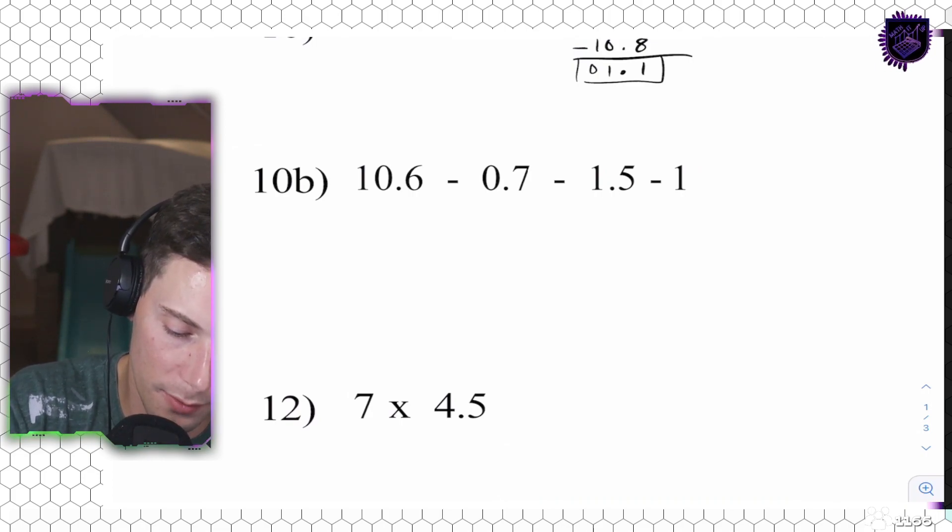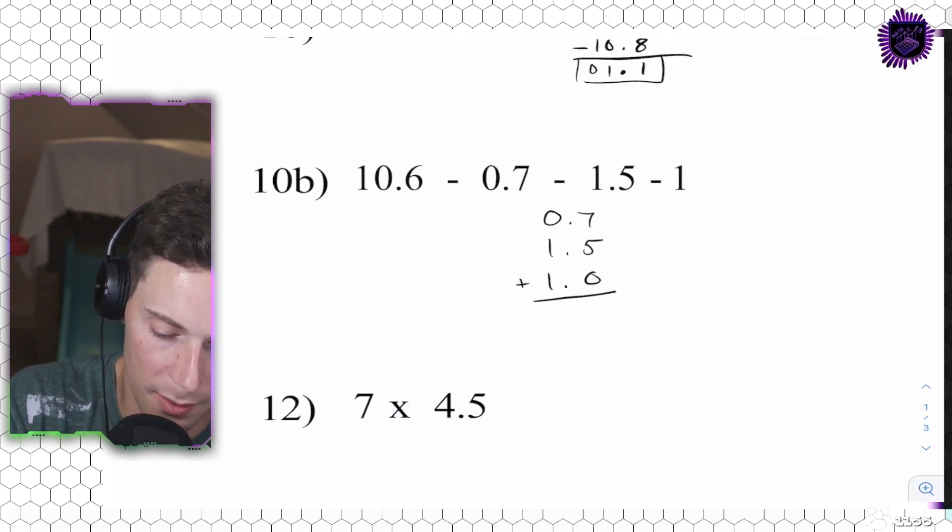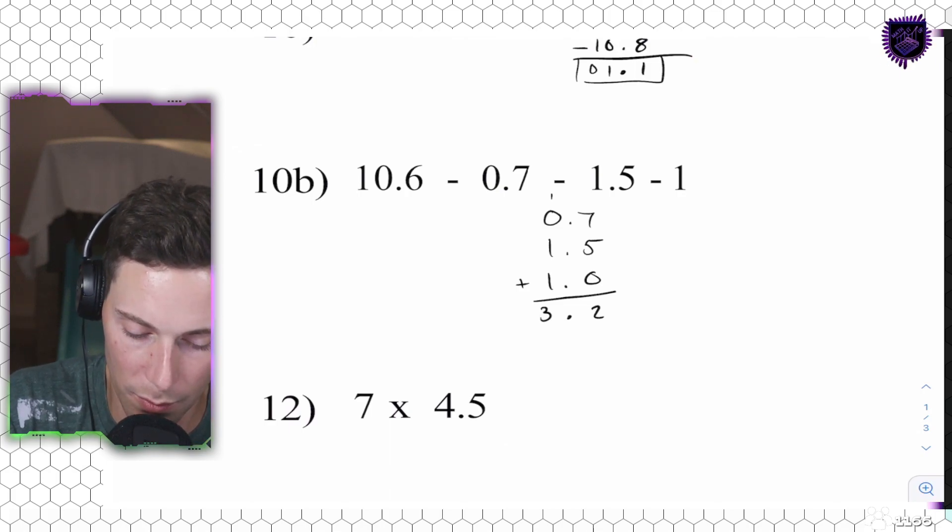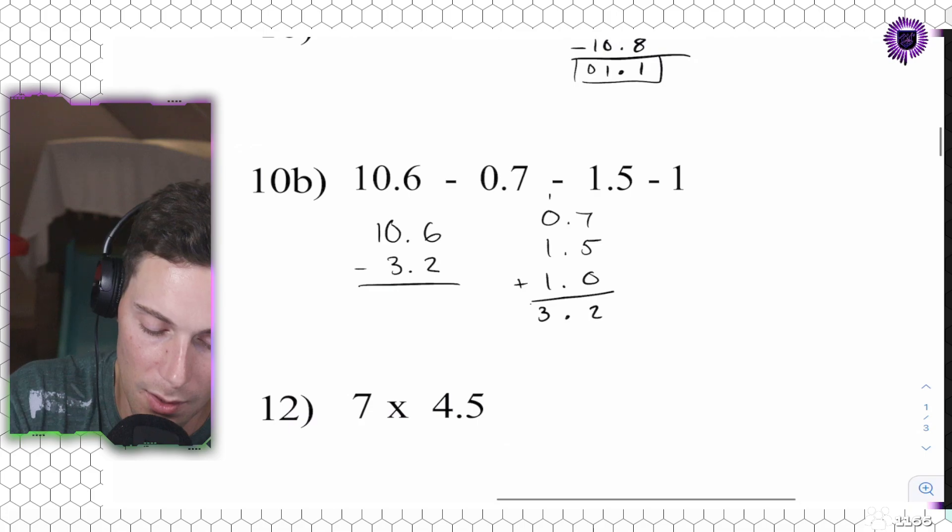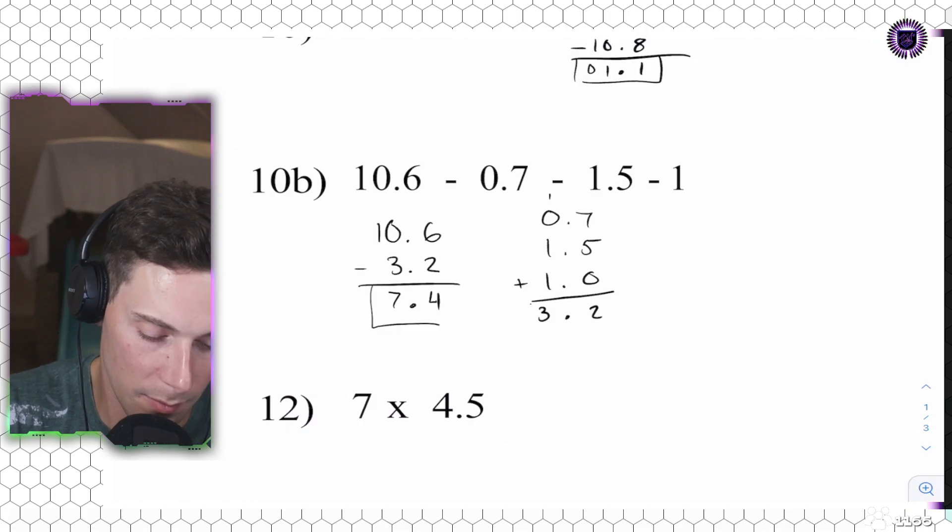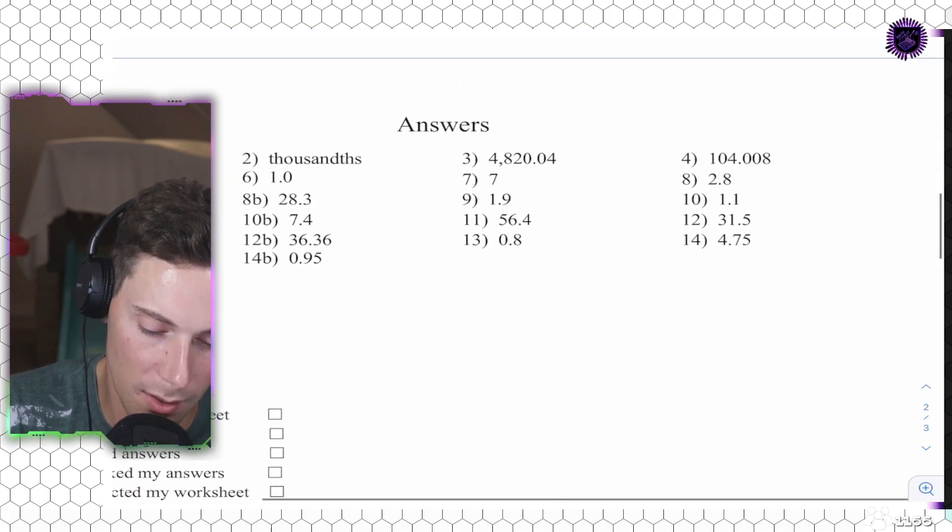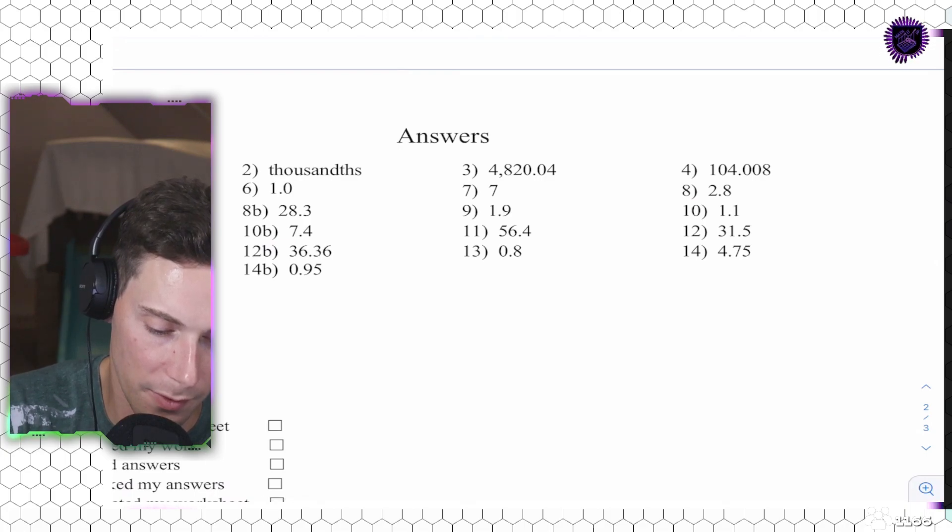All right. 0.7. 1.5. 1.0. Let's add these. That's going to be 1.2. Put the, carry the 1. That's 3.2. I'm going to check it this time. 3.2. Now, 10.6 minus 3.2 is going to be 4.7. Drop down my decimal. 7.4. 10b. There it is. 7.4. Correct.